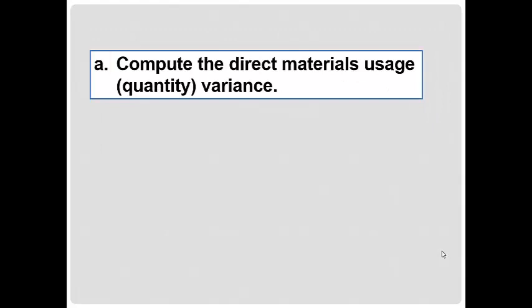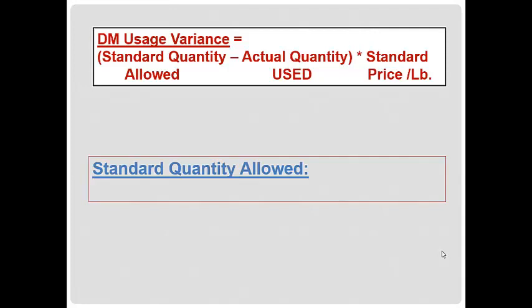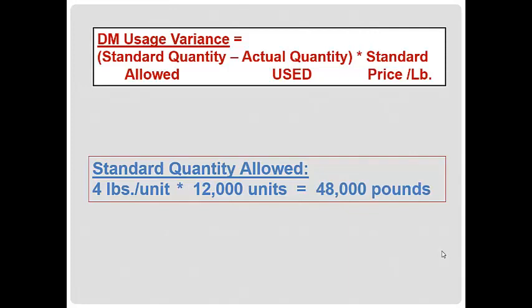Compute the direct materials usage or quantity variance. The formula is: in parentheses, standard quantity allowed minus actual quantity used, multiplied by the standard price per pound. The standard quantity we'll have to compute in total. We know that per unit the standard is 4 pounds, and we know that we actually produced 12,000 units — using actual production, not planned production. That means we should have used 48,000 pounds of material.